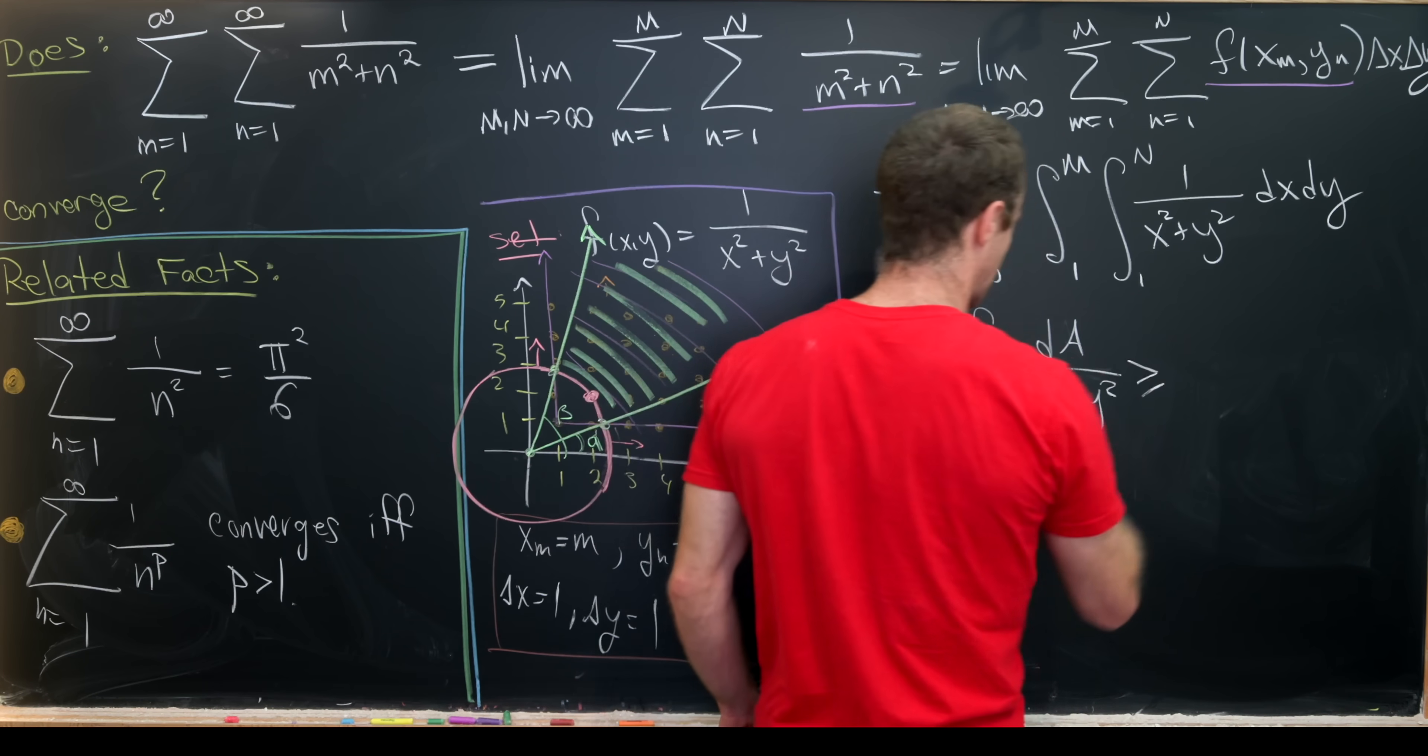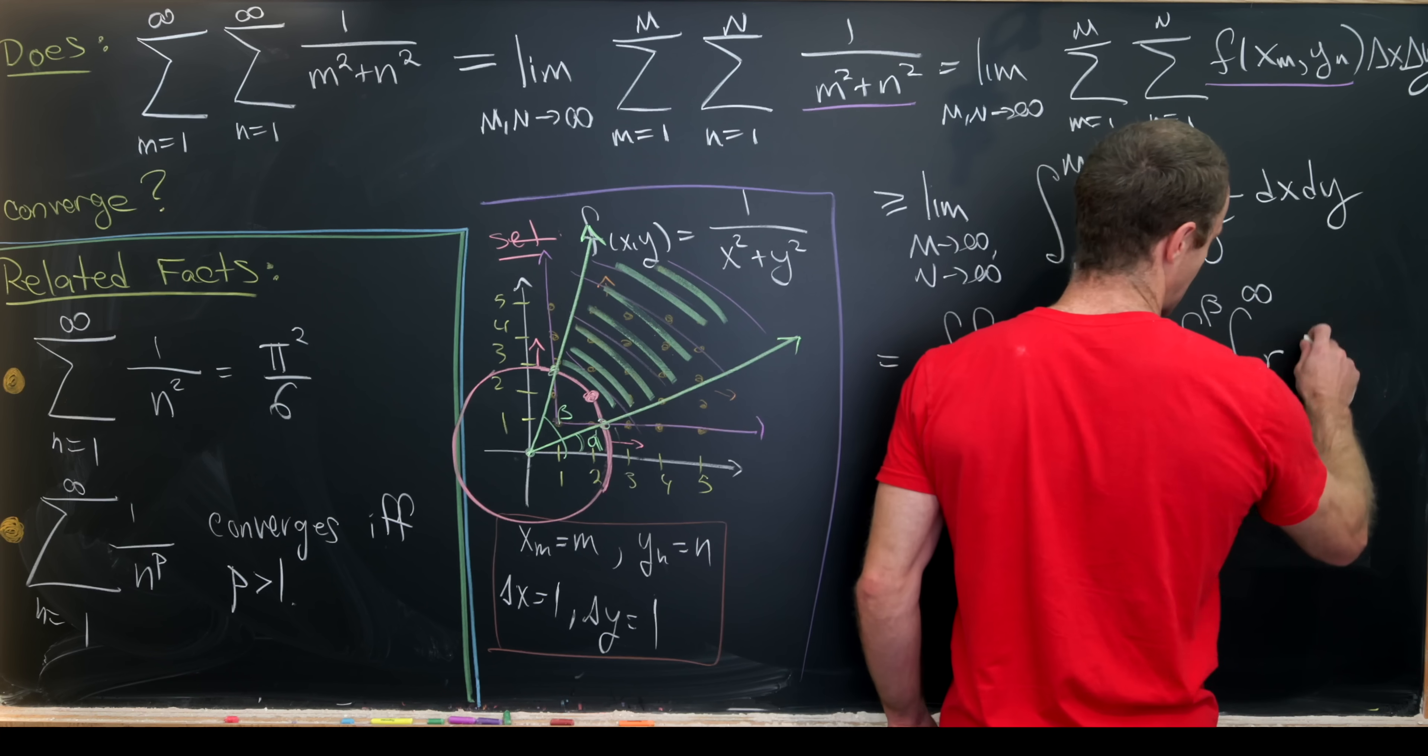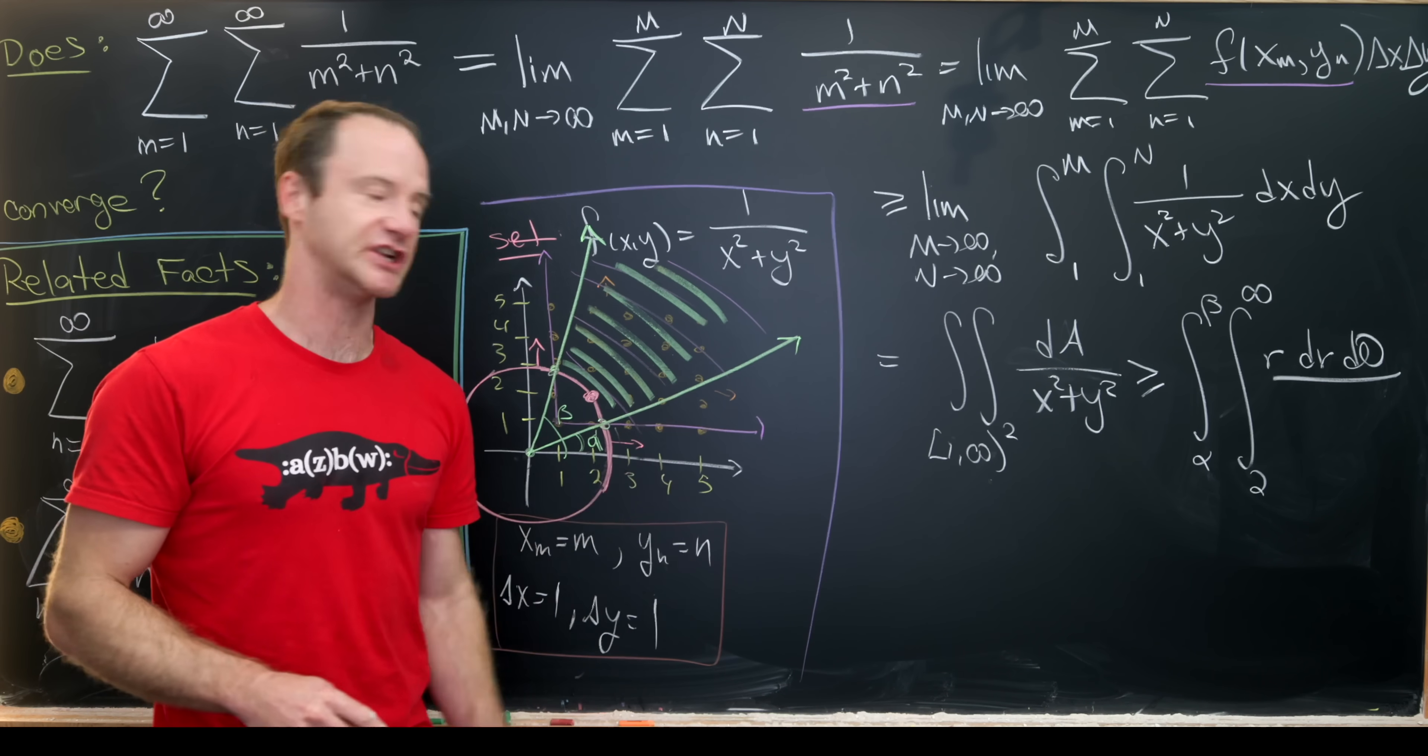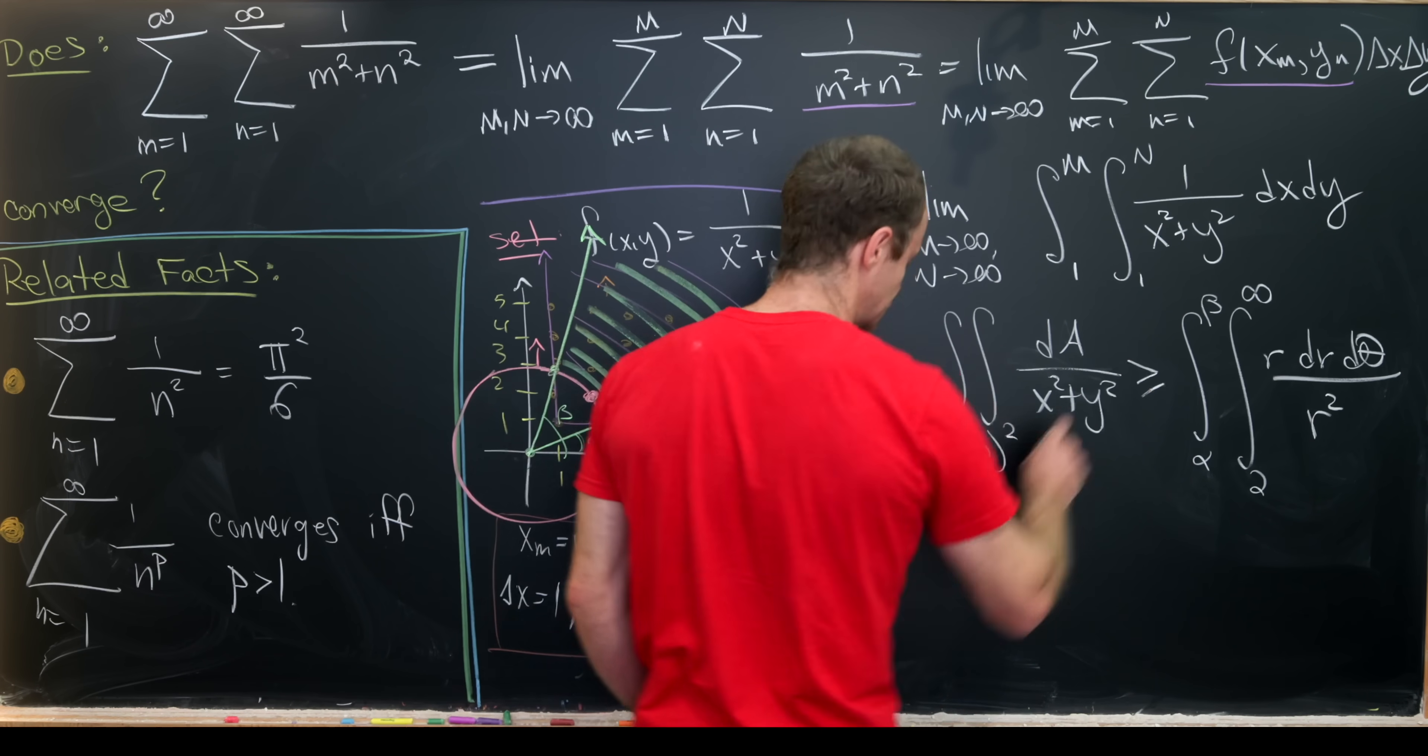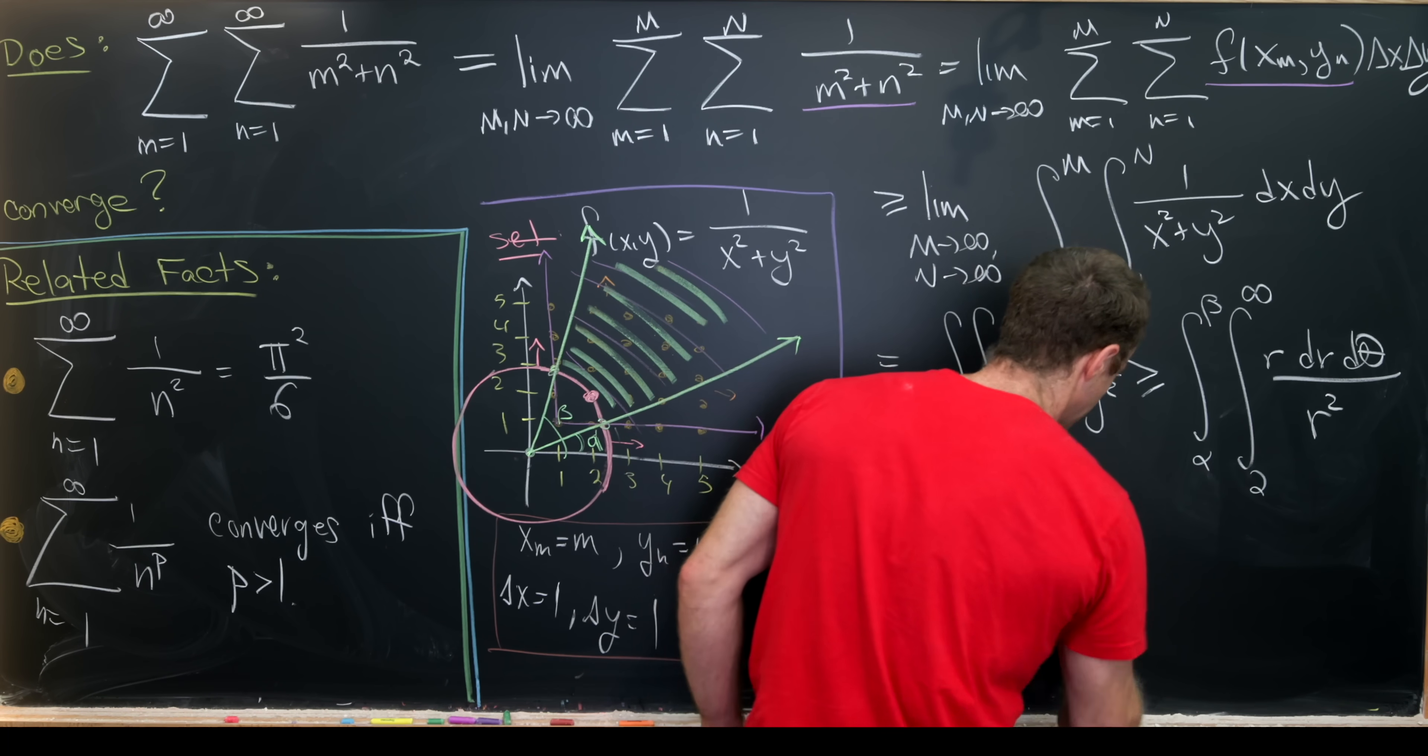So now let's write this down. Our integral is bigger than or equal to the integral from alpha to beta, and then the integral from two up to infinity of dA, which is r dr d theta over x squared plus y squared. But by our polar change of variables, x squared plus y squared is r squared. So we get r squared here. But now let's notice that that will be equal to beta minus alpha, just doing the theta integral, and then we'll have the integral from two up to infinity of dr over r.